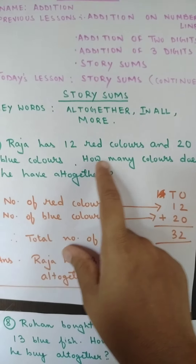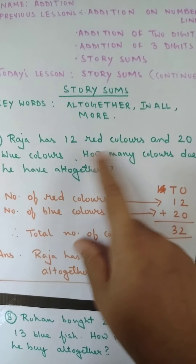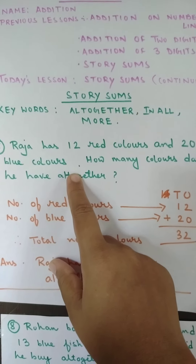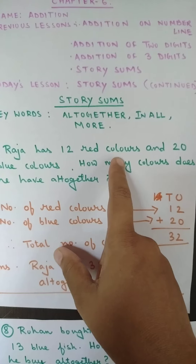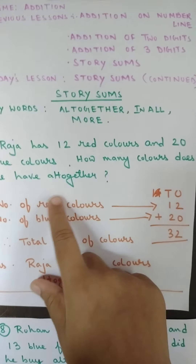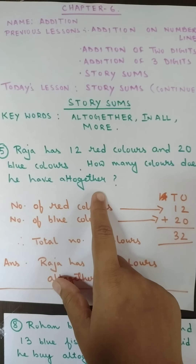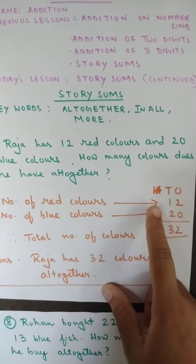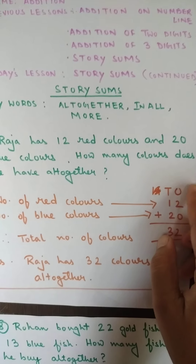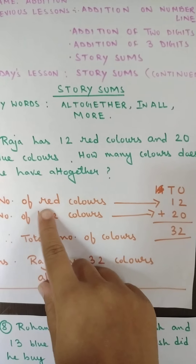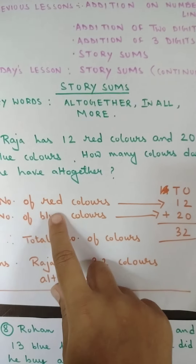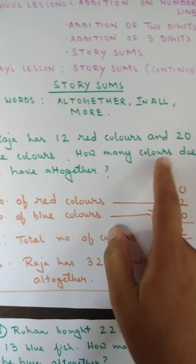Number five: Raja has 12 red colors and 20 blue colors. Raja is the name of a boy and he has 12 red colors and 20 blue colors. Now how many colors does he have altogether? You will be writing on the extreme right-hand side TO, and number of red colors — how many red colors? 12. And how many blue colors? 20.